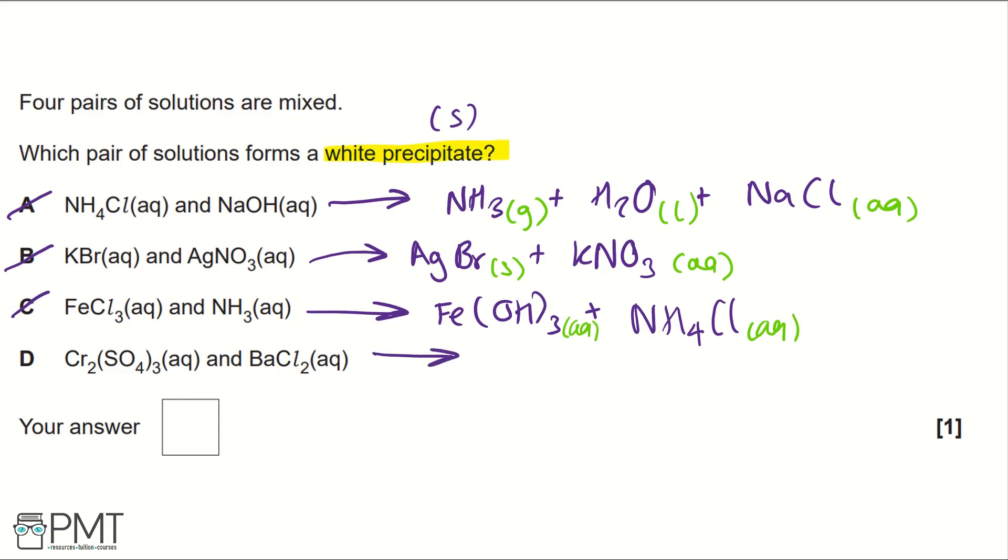If we move on to D, we would form chromium chloride and barium sulfate.